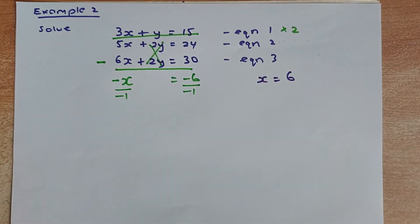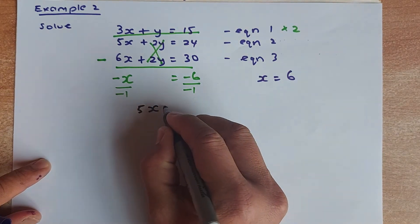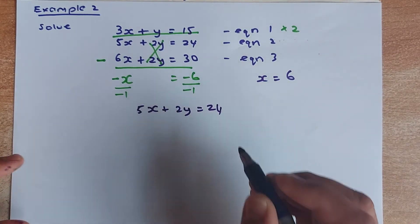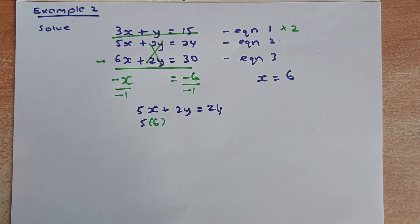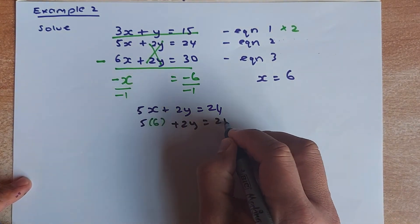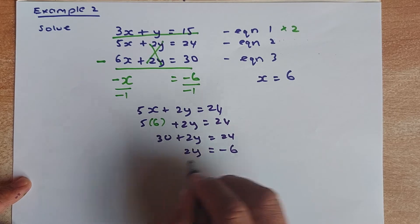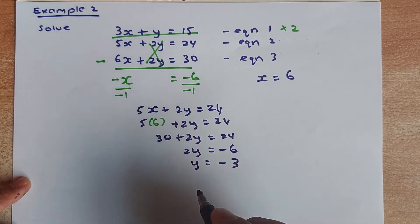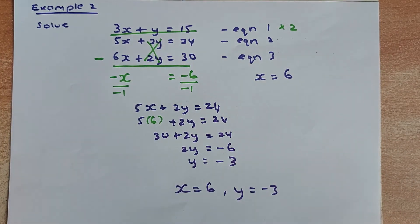Now we need to find Y. We substitute X equals 6 into equation 2: 5X plus 2Y equals 24. So 5 times 6 is 30, giving 30 plus 2Y equals 24. Therefore 2Y equals negative 6, and dividing by 2, Y equals negative 3. The final answer is X equals 6, Y equals negative 3. Substituting into either equation 1, 2, or 3 should give you the correct result.